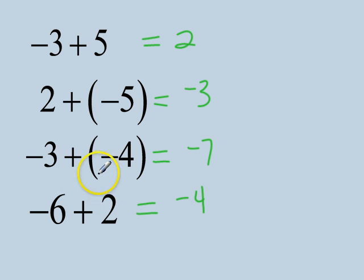When the signs are the same, negative 3 and negative 4, you'll notice that we added. Then we want to look at what was the outcome of our answer. When we had negative 6 and positive 2, we ended up with a negative 4. But up at the top, when we added positive 5 to negative 3, we got positive 2.